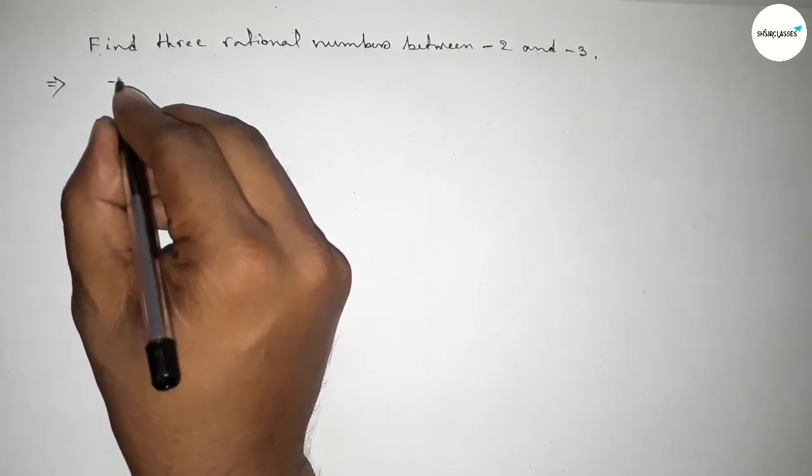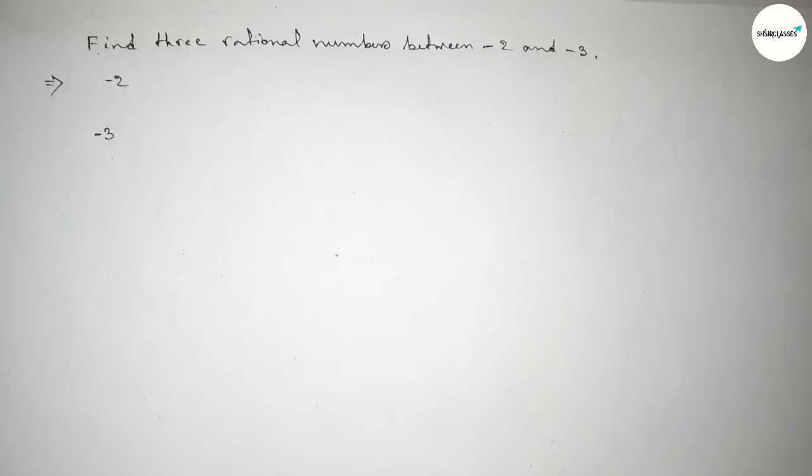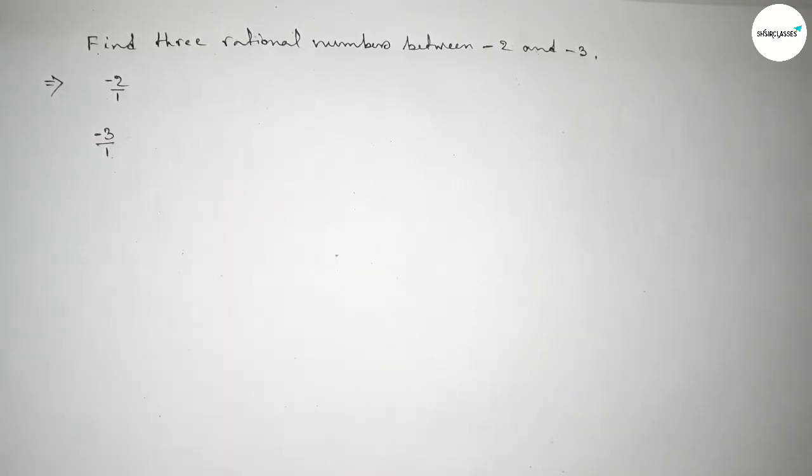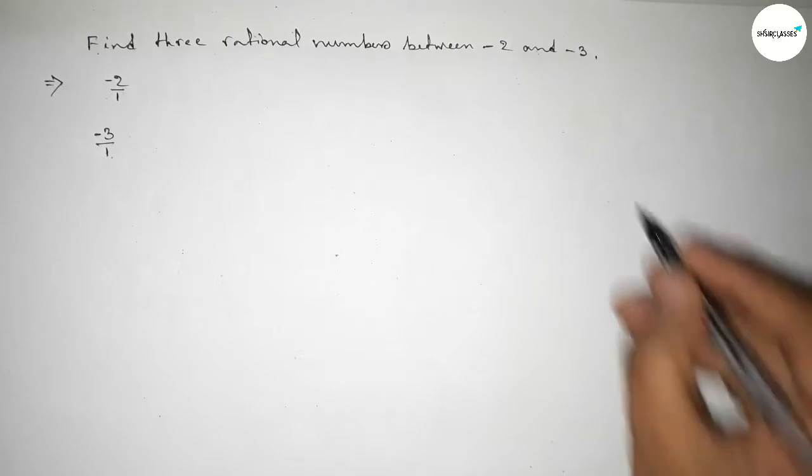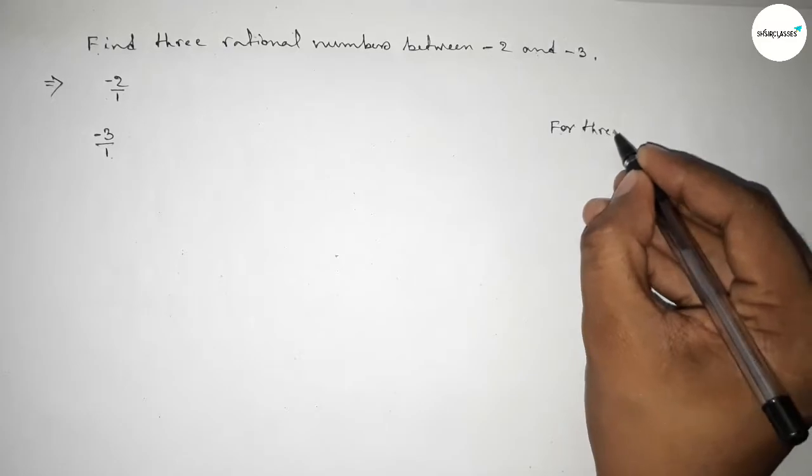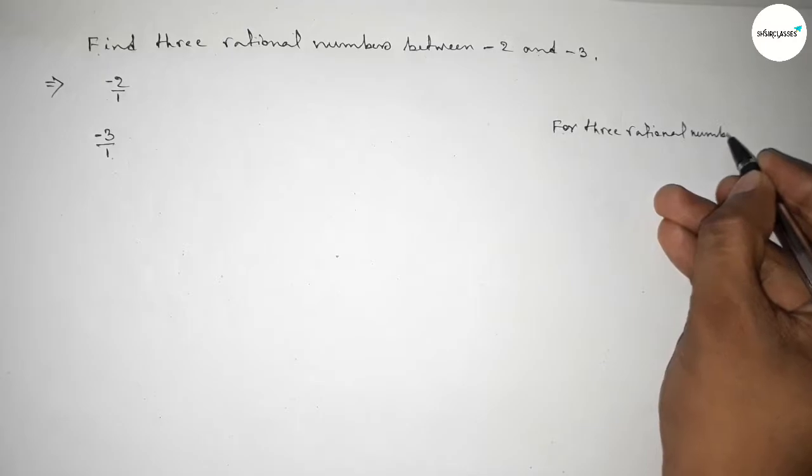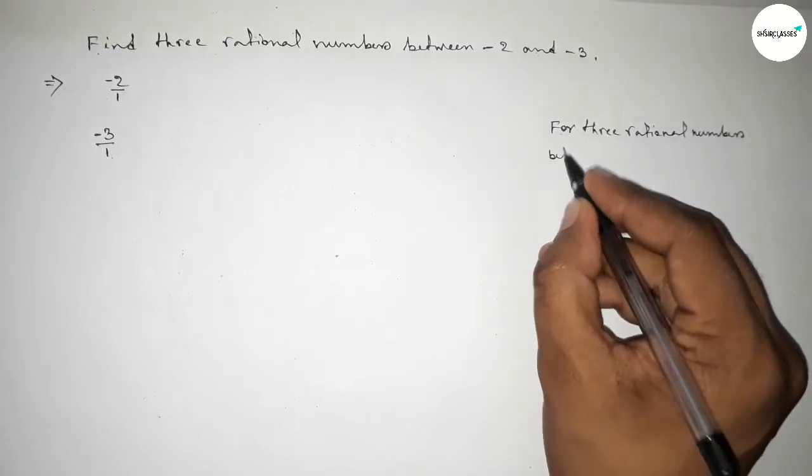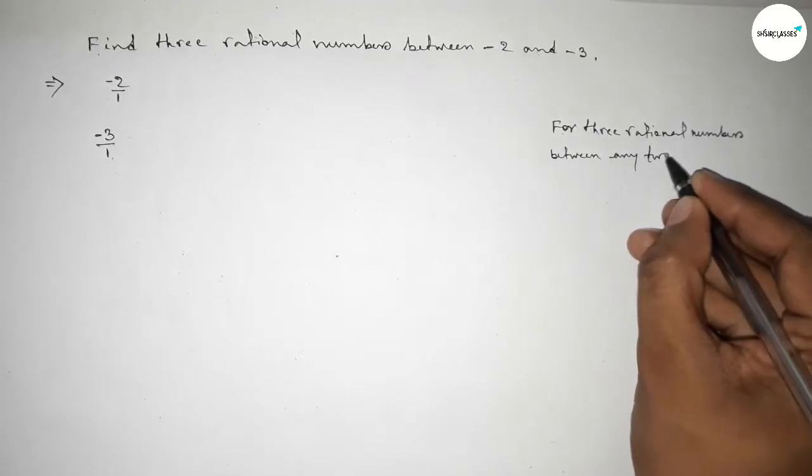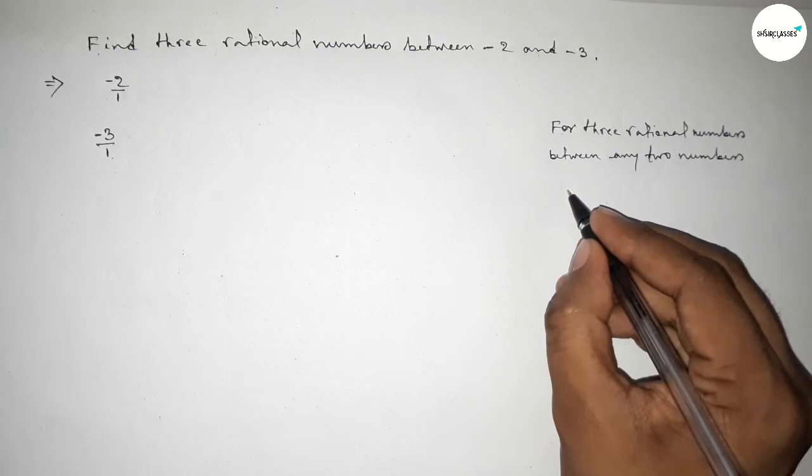Given the two numbers -2 and -3, we can write them as -2/1 and -3/1. Next, for finding three rational numbers between any two numbers, we have to follow a method.